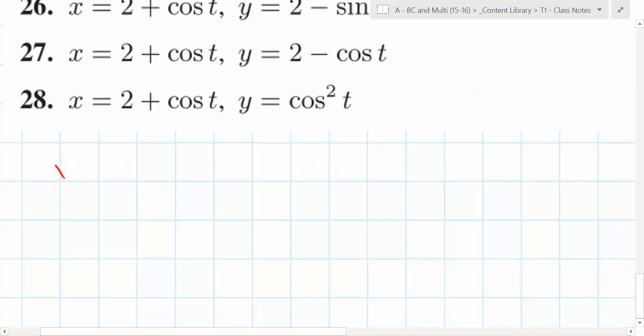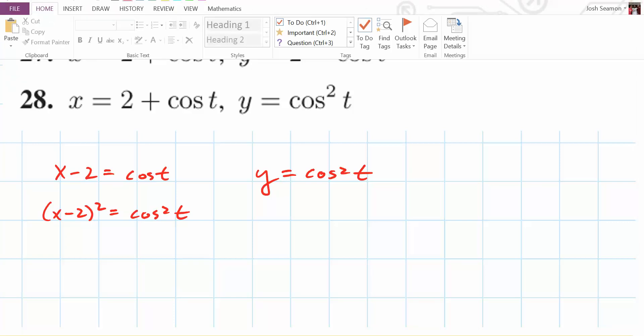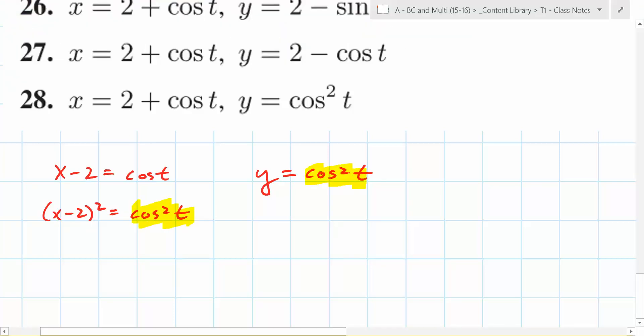X. I love that. Good job, Kevin. X minus 2 is equal to cosine t, right? And what does y equal? Cosine squared. Oh, so what could you do to both sides? X minus 2 squared is equal to what? Cosine squared t. So what can you do now? Oh, look. There's cosine. So what do we have here? Y equals what? What does y equal? X minus 2 squared.